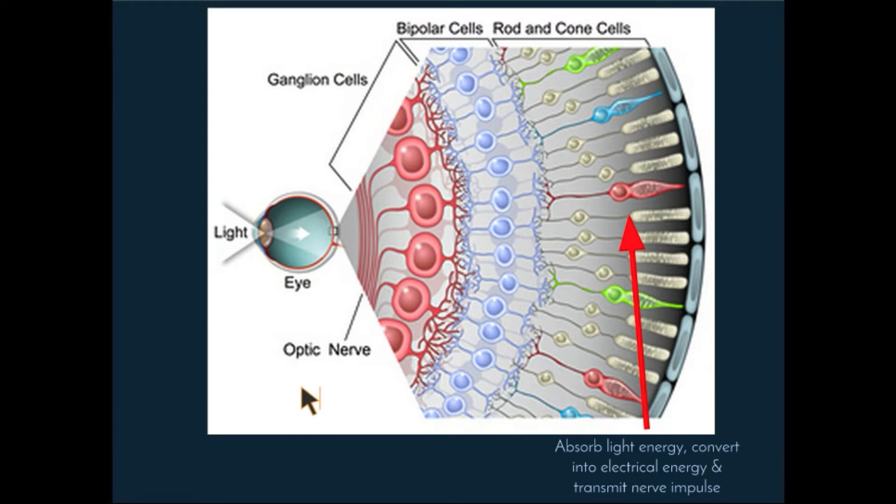Firstly, they absorb the light energy, which involves the visual pigments. They then convert this light energy into electrochemical energy, generating a nerve impulse, and then they transmit this nerve impulse towards the bipolar cells of the retina.